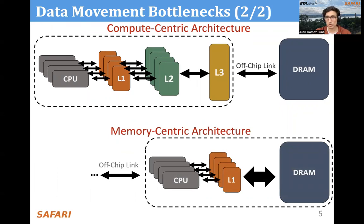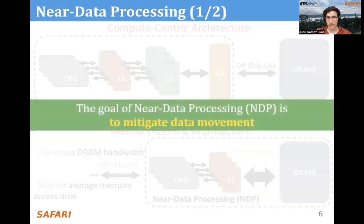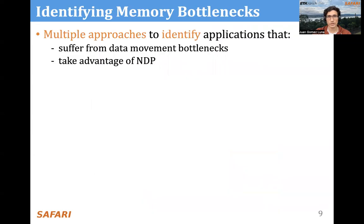We advocate for memory-centric architectures in order to alleviate the data movement bottlenecks. In memory-centric architectures, what we do is placing compute units closer to the memory, as you can see in this picture, or equipping the main memory — or the DRAM memory itself — with compute capabilities. That's what is called processing in memory or near data processing, which can enjoy abundant DRAM bandwidth and shorter average memory access time. The goal of near data processing is to mitigate data movement bottlenecks.